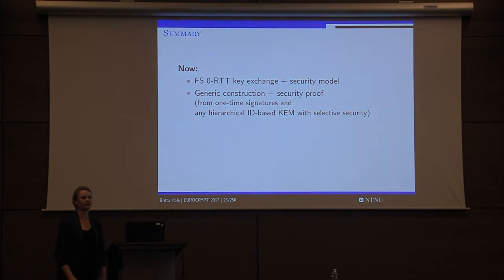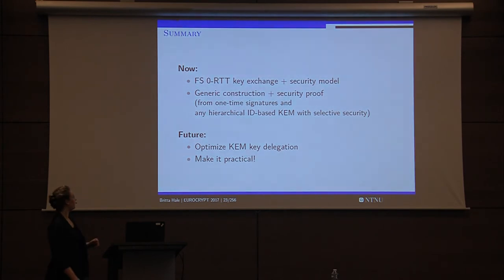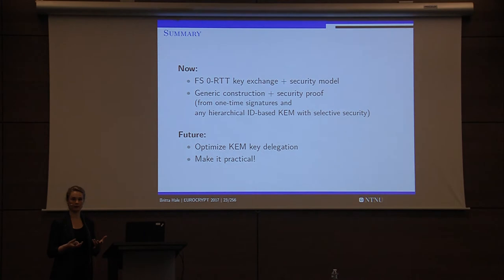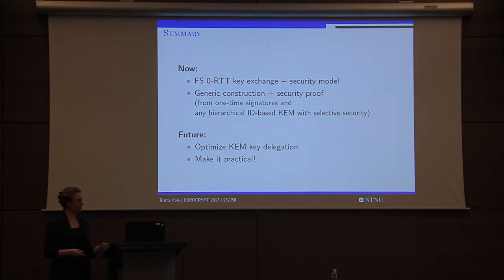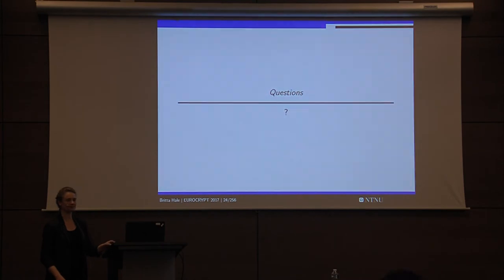So what do we have now? We have forward-secure zero RTT key exchange. We have a security model for that, a generic construction and security proof, and a whole bunch of other amazing details you can read in the paper. For future work: we can optimize the scheme's key delegation — a lot of work so far has optimized decapsulation but not key delegation, which for our construction is the most expensive part. So if we optimize that, the whole scheme becomes optimized. And once again — yes, it is possible, and we have won Track A. Thank you.